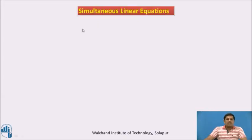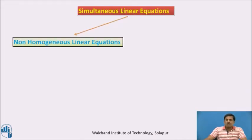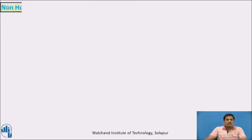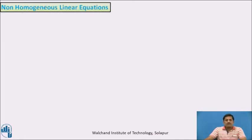The system of simultaneous linear equations is categorized into two parts. The first one is non-homogeneous linear equations and the second one is homogeneous linear equations. We will discuss one by one. First, let us consider non-homogeneous linear equations.